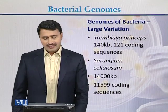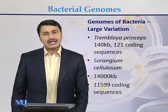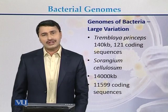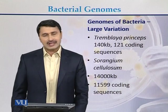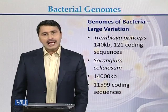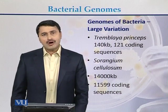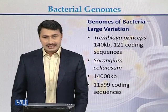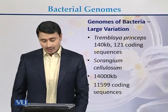Here we have two examples. The first example is the bacterium Tremblaya princeps, whose genome consists of 140 KB and there are 121 coding genes present on its genome. On the other hand, another bacterium, Sorangium cellulosum, has a genome consisting of 14,000 KB in size, while there are 11,599 coding sequences.